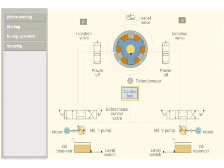The control box receives helm order from bridge and sends electric signals to the bi-directional control valve. Potentiometer senses the rudder's stock position and sends the feedback to the control box.